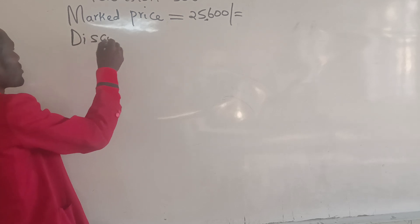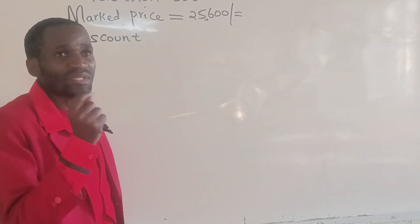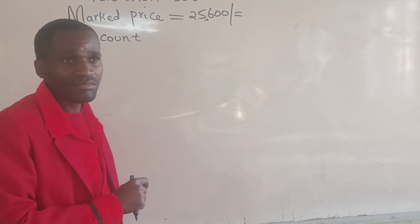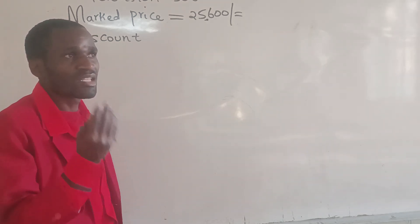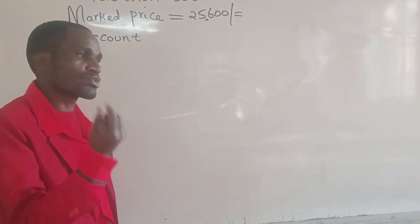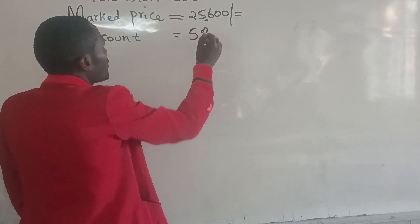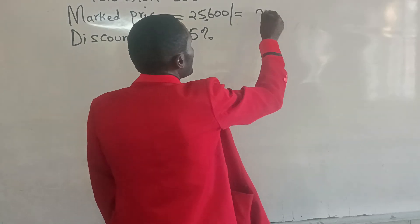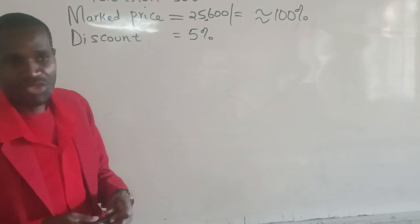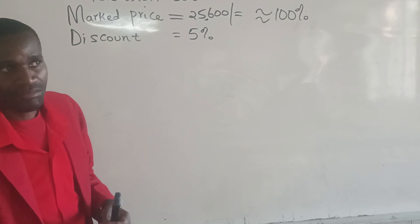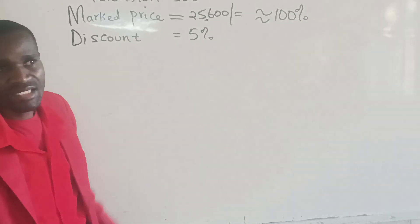Marked price is always associated with the discount. For example, in a supermarket, if a particular item is marked at 1,000 Kenyan shillings, you are not going to bargain. But there are some places you can bargain, and the seller can deduct a particular amount from what you are supposed to pay as the marked price. In mathematics, we always say that the marked price is always 100% — that is the initial price at which a particular item is supposed to get sold. Anything deducted from that 100% is referred to as the discount.